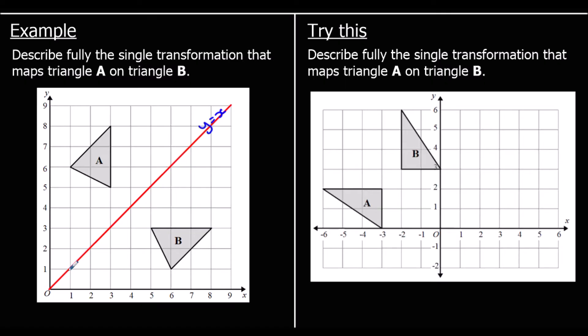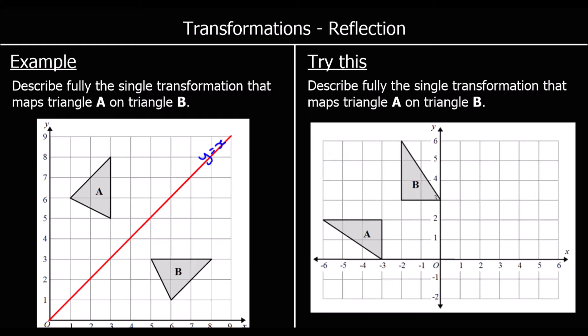The line y equals x goes through (1,1), (2,2), (3,3), (4,4), (5,5), and so on. So that is our mirror line this time.